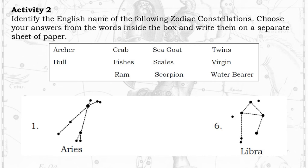Activity 2: Identify the English name of the following zodiac constellations. Choose your answers from the words inside the box and write them on a separate sheet of paper.